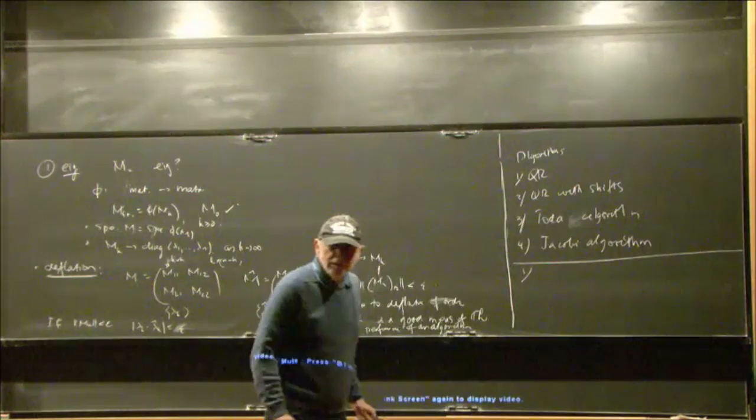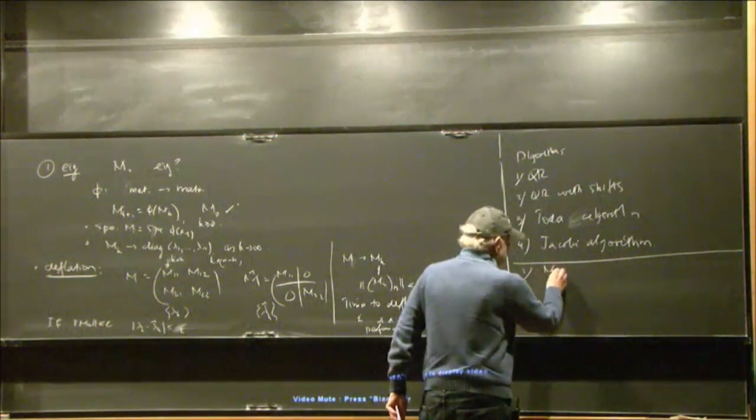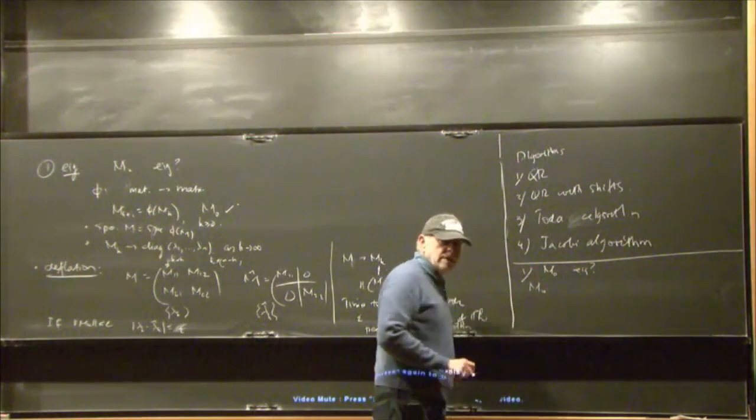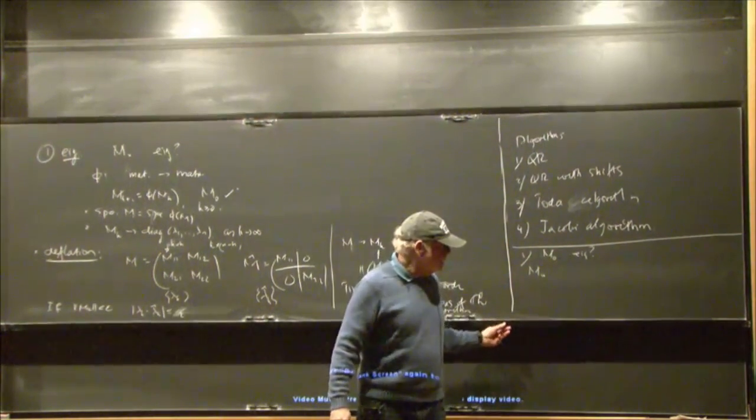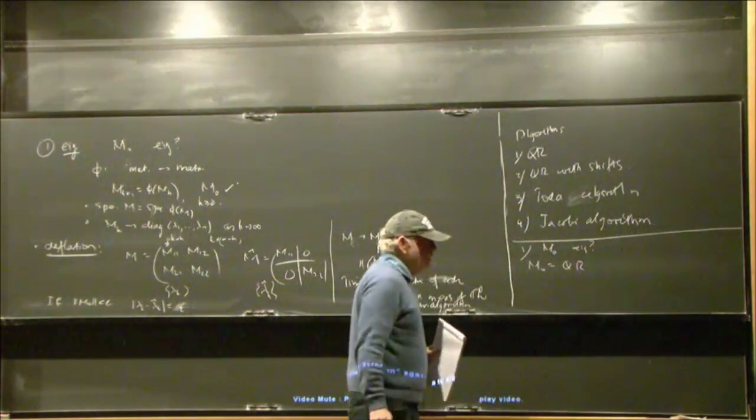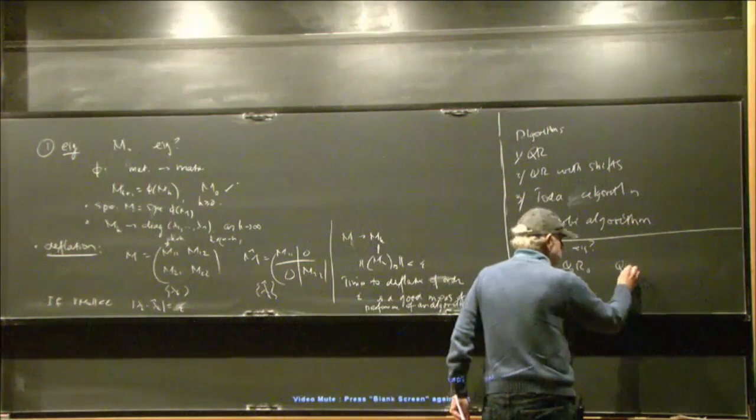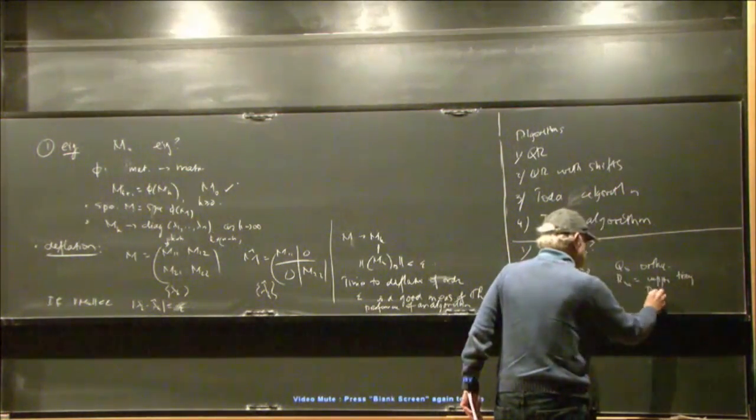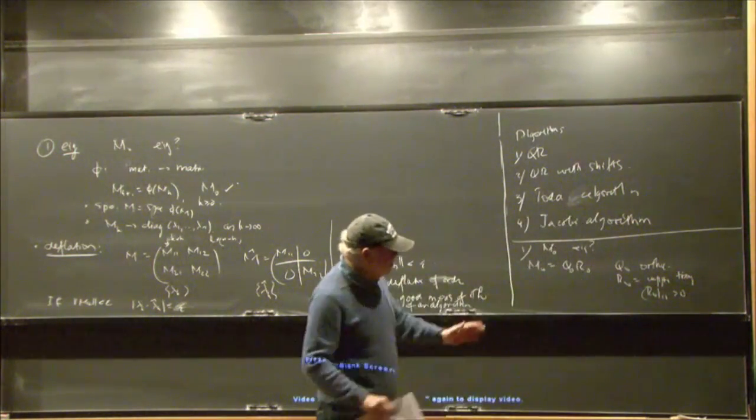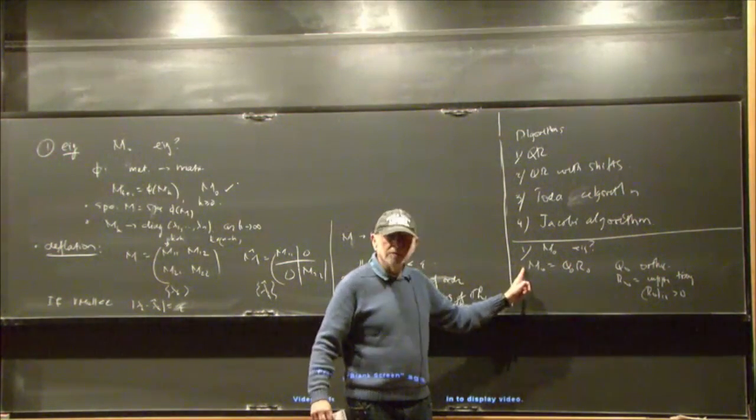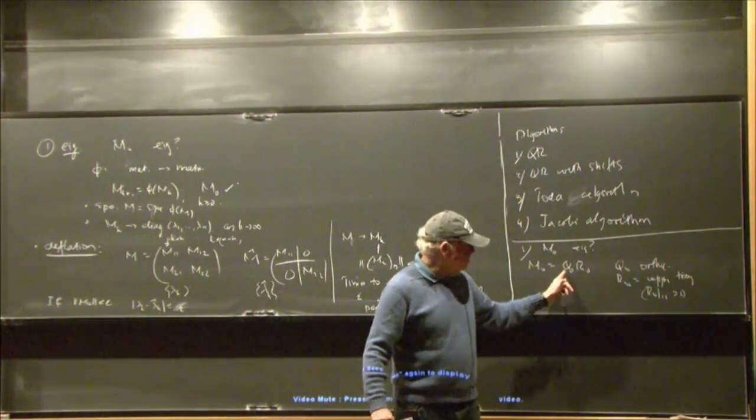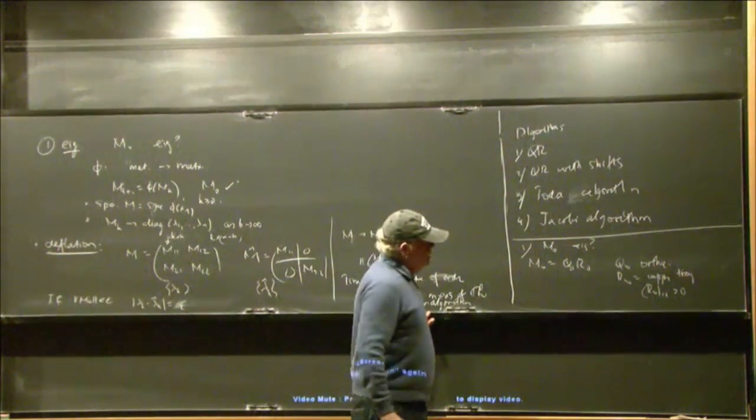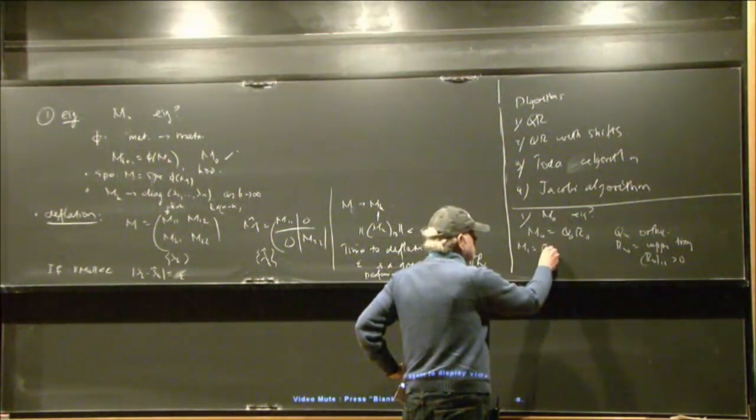So, the first one is just a very, very elegant algorithm. So, here is your matrix M0 whose eigenvalues you want. So, you take your matrix M0 and let's assume that M0 is non-singular. And you factorize it as Q times R. So, Q0 is orthogonal. R0 is upper triangular. And R0 II are positive. So, if you think about it, that means that the first column of Q0 is just a multiple of the first column of M0. The second column of Q0 is combination of the two columns of this. So, all you're doing is Gram-Schmidt starting from the left.